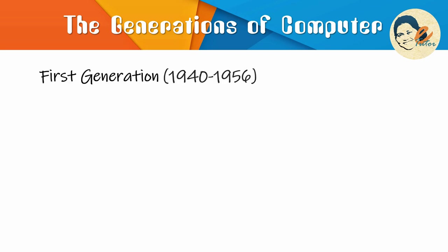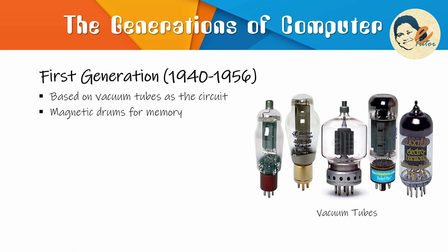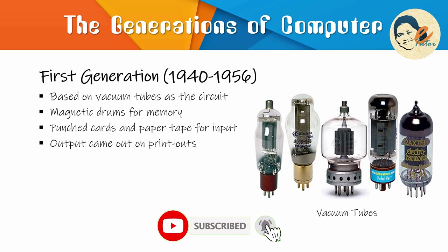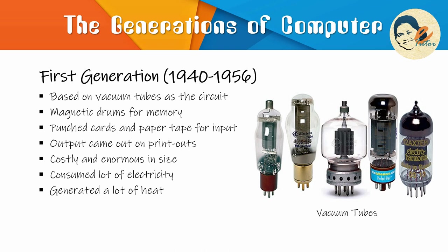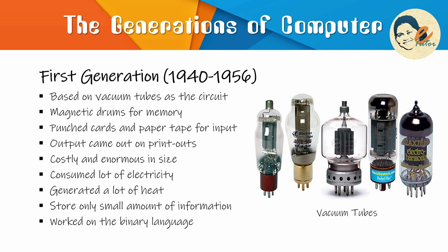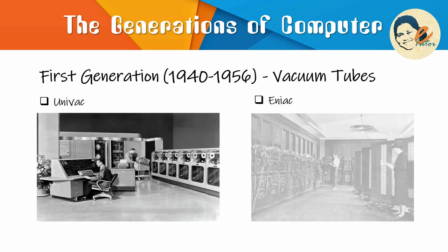First generation: the period 1940 to 1956 is roughly considered as the first generation of computers. These computers were based on vacuum tubes as the circuit and magnetic drums for memory. The input was based on punch cards and paper tape, and the output came out on printouts. These computers were very costly and enormous in size, literally taking up entire rooms. They consumed a lot of electricity and generated a lot of heat. They could store only a small amount of information due to the presence of magnetic drums. The first generation computers worked on binary coded concept, i.e. the language of 0s and 1s.